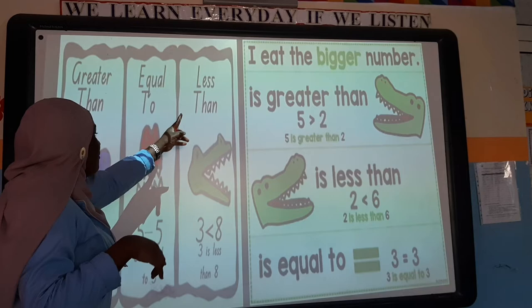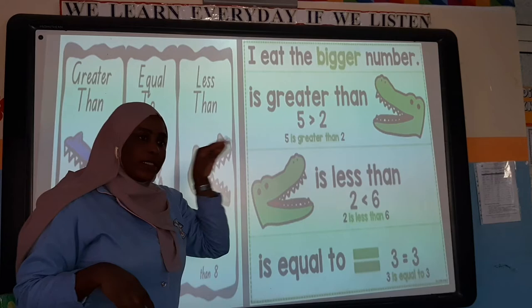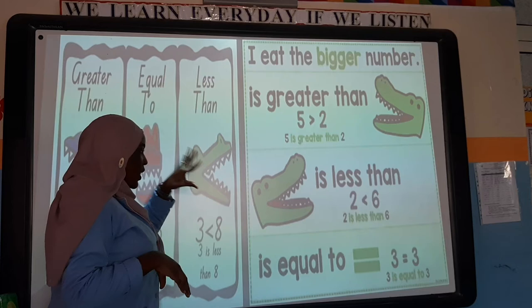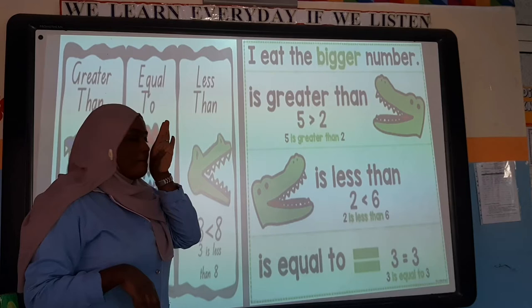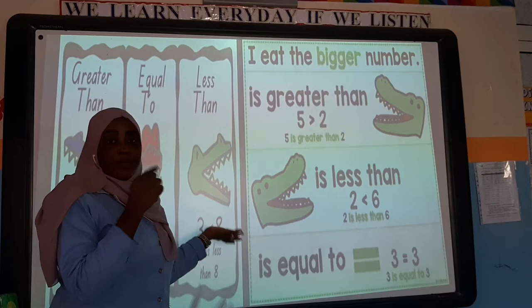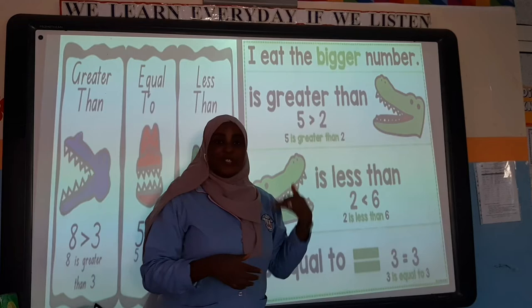For 'less than,' the alligator eats the bigger number. So we have 3 and 8 — the alligator always eats the bigger number, so it faces the larger number. 3 is less than 8 because 8 is greater than 3. The alligator eats the bigger number.